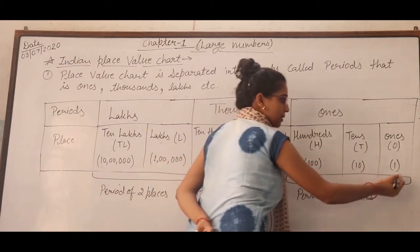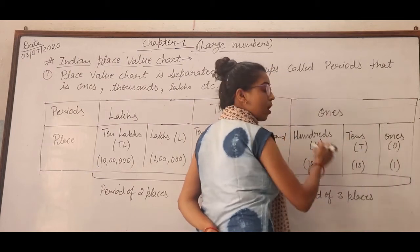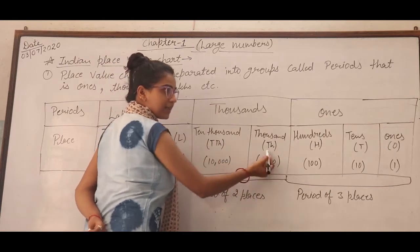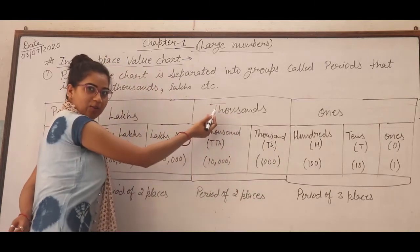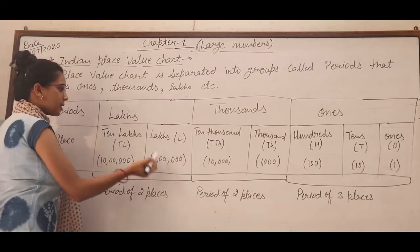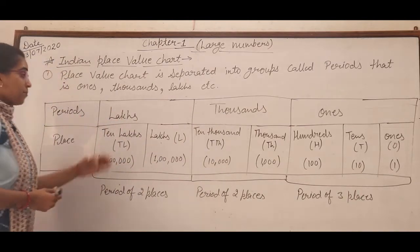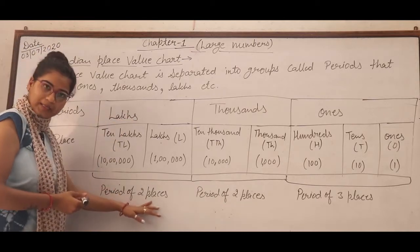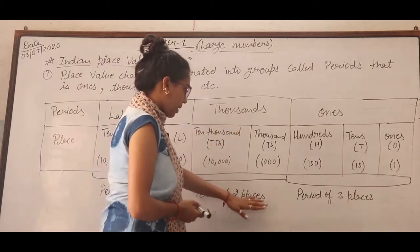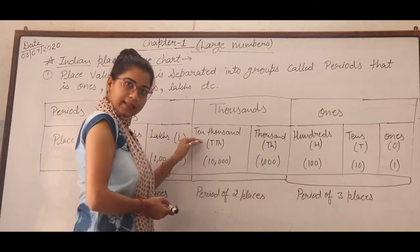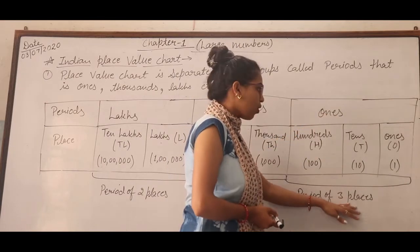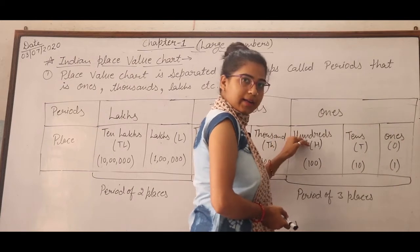जब हम Once, Tenth and Hundred तीनों को साथ साथ में Read करते हैं तो वो हमारा Once Period बन जाता है. Thousand and Ten Thousand को साथ साथ Read करते हैं तो वो Thousand Period बन जाता है. Lags Period में हमारे two places होते हैं — lakhs and ten lakhs. Thousand Period में two places होते हैं — thousand and ten thousand. And Once Period में three places होते हैं — once, tens and hundred.